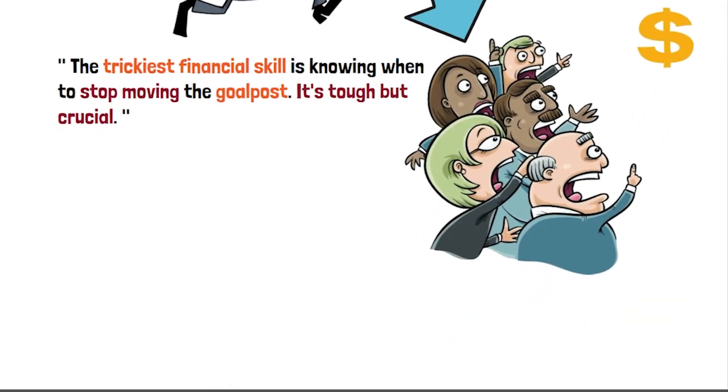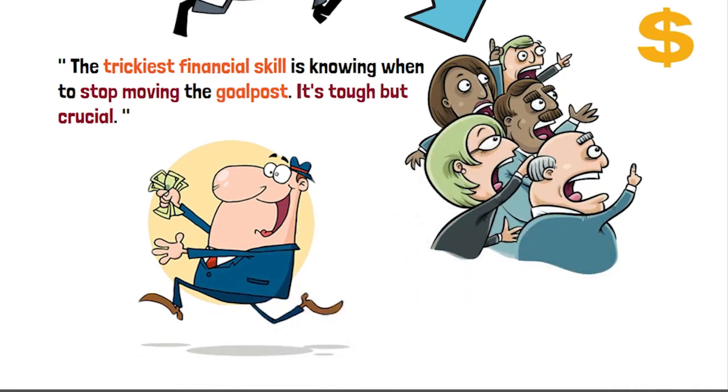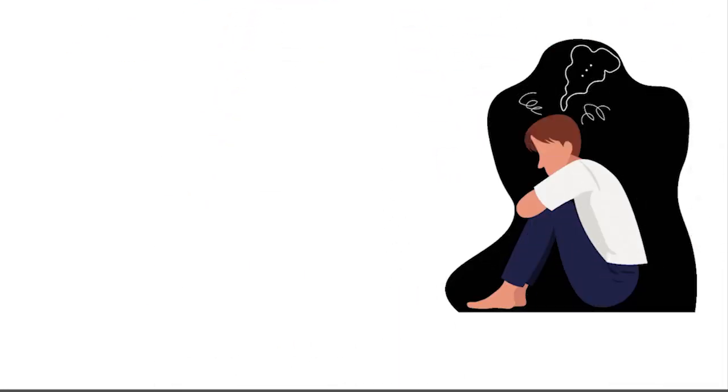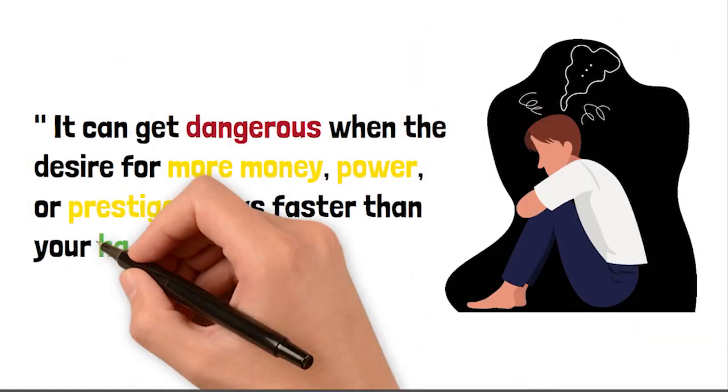The trickiest financial skill is knowing when to stop moving the goalpost. It's tough, but crucial. If your expectations always rise as you achieve more, you'll never feel satisfied no matter how much you work. It can get dangerous when the desire for more money, power, or prestige grows faster than your happiness.